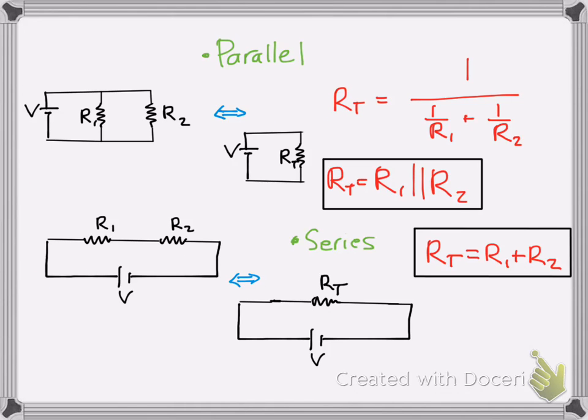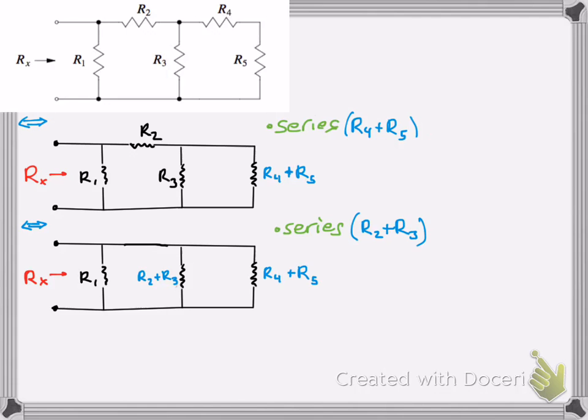Now, look. This looks like the first part right here. They're all in parallel. You have R1, R2, and then you could say R3. There you are. R1, R2 plus R3, and R4 plus R5. Those are all in parallel.